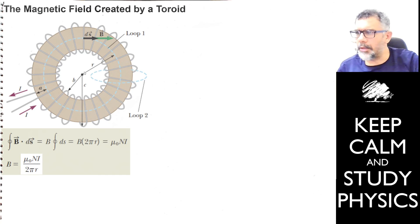Small r, radius of the central circle of the toroid. So the result is mu0 times n times i divided by 2 pi small r.